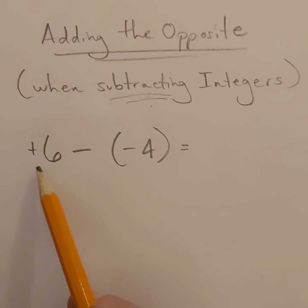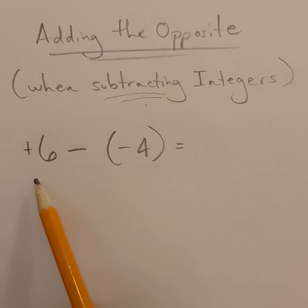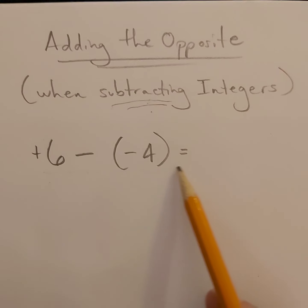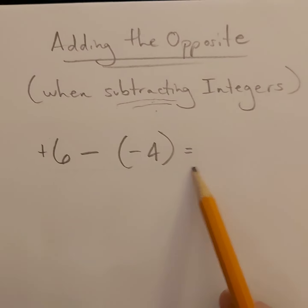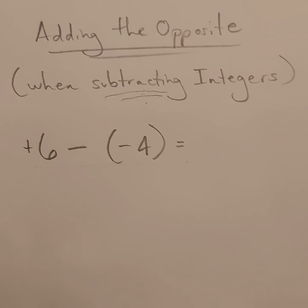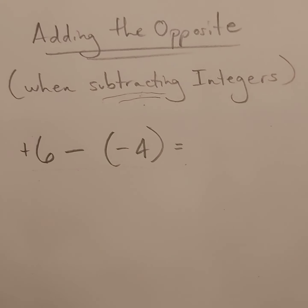So we take a straight up math sentence like this. Positive six, take away negative four equals. You might be able to visualize that in a number line. You might be able to use integer chips to model that.